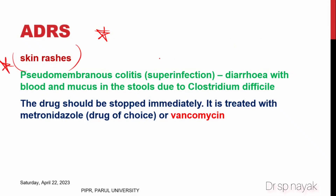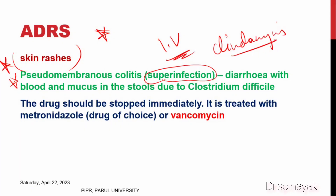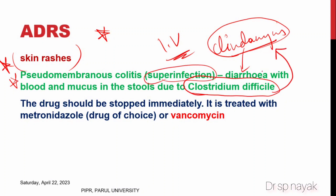Adverse drug reactions of clindamycin: an important adverse effect is skin rashes, especially when given through the IV route. A very important adverse effect is superinfection — clindamycin misuse can cause Clostridium difficile infection. If this occurs, clindamycin should be immediately stopped and treatment started with vancomycin or metronidazole to treat the C. difficile infection.